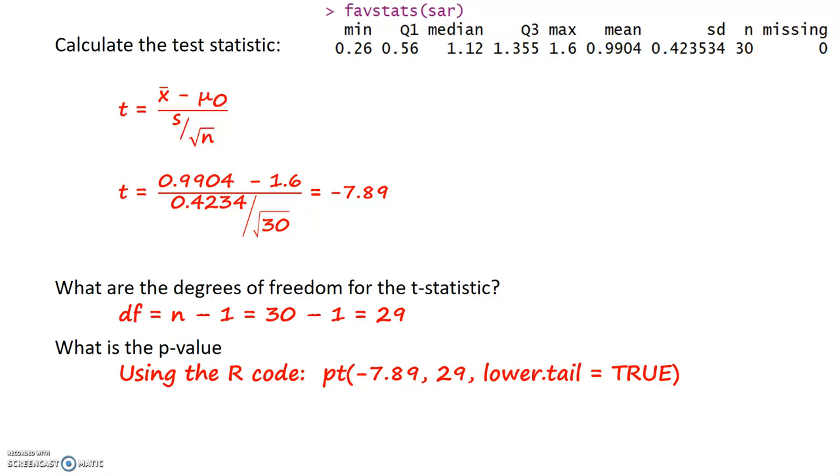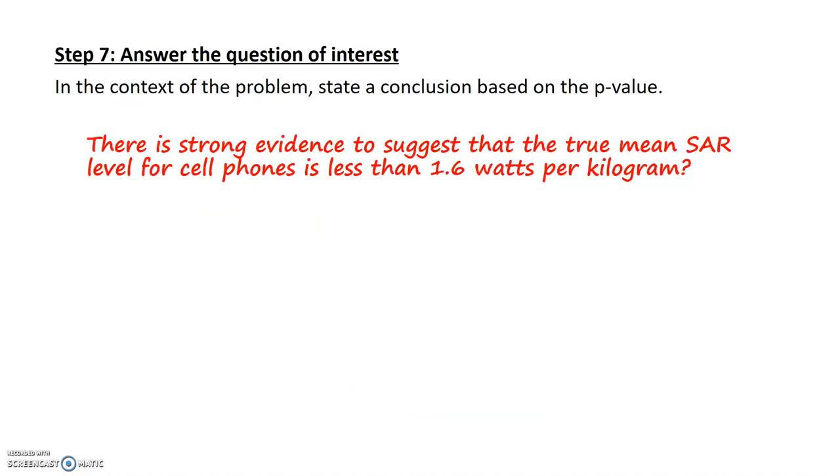Remember that picture we drew? All sample means less than or equal to 0.9904 would be considered more unusual. The p-value corresponds to that area to the left. When I go to R, I find that p-value to be extremely small. So I'll report the p-value as being less than 0.0001.